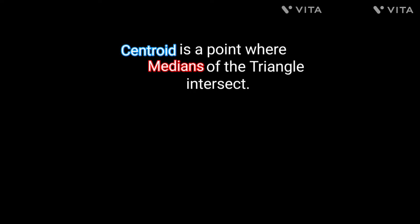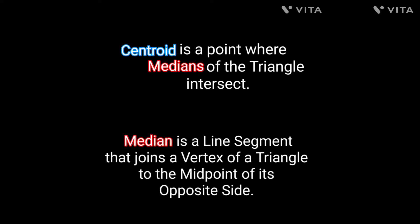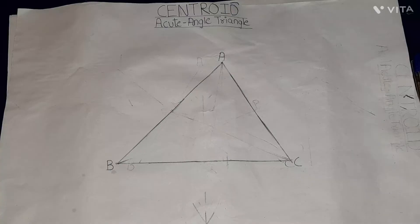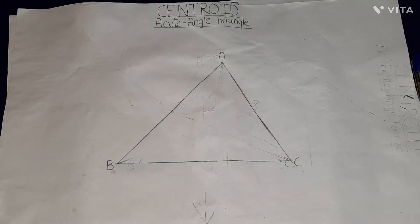A centroid is a point where the medians of the triangle intersect, and a median is a line segment that joins the vertex of a triangle to the midpoint of its opposite side. So first, let's construct the centroid of an acute angle triangle.